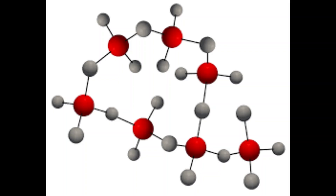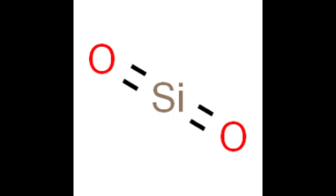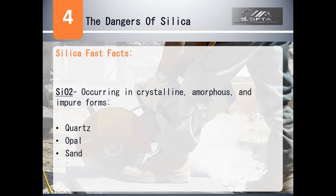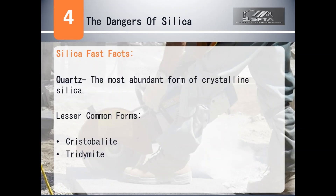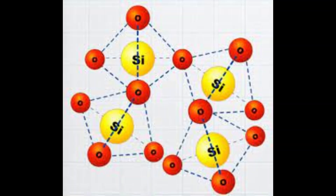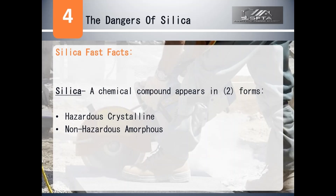Silica is known chemically as silicon dioxide, SiO2, occurring in crystalline, amorphous, and impure forms — quartz, opal, and sand, respectively. Quartz is the most abundant form of crystalline silica; lesser common forms would be cristobalite and tridymite. Silica is a chemical compound formed from both oxygen and silicon atoms, and appears in two forms: hazardous crystalline or non-hazardous amorphous.